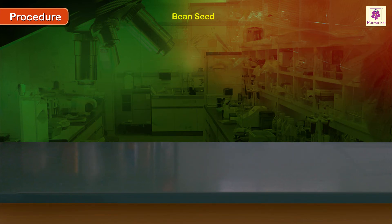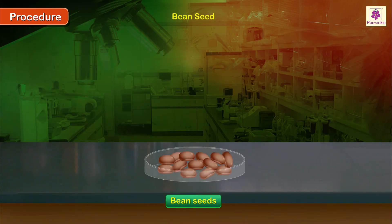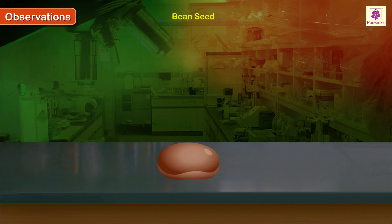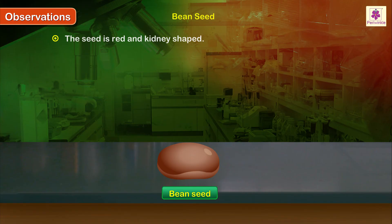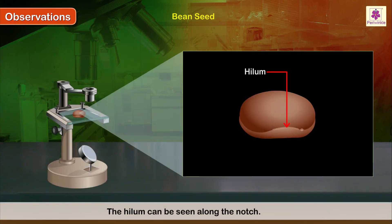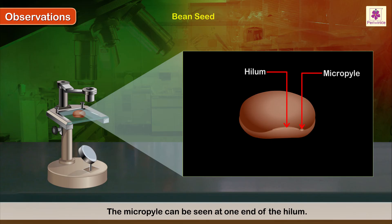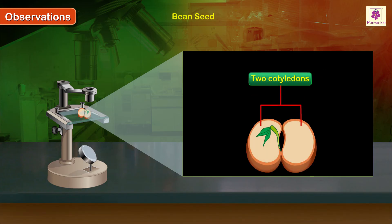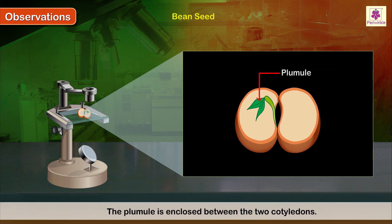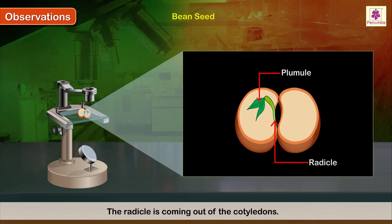Procedure: Repeat the same steps with the bean seed. Observations: the cotyledons are thick and fleshy. The plumule is enclosed between the two cotyledons. The radicle is coming out of the cotyledons. The hypocotyl can be seen easily.